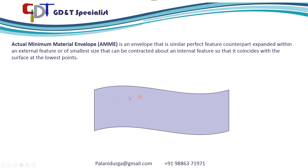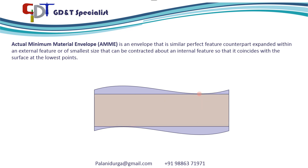You will see this with an example — we have a shaft here. In this shaft, you have an envelope which expands in such a way that it touches the low point of the shaft. This envelope is maximum because it is touching the extremities of the shaft at the low ends. This envelope is called the actual minimum material envelope.